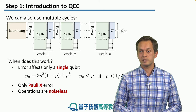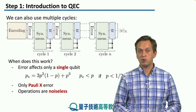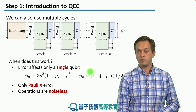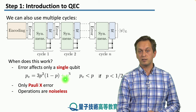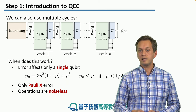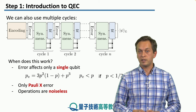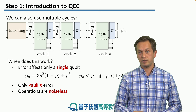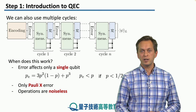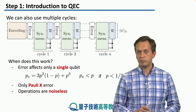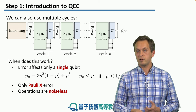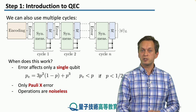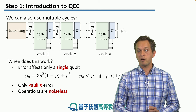We can perform the same analysis as for the classical repetition code and see that the probability of a logical error is given by the same expression: if the physical qubit flip probability is less than one half, we suppress the error. There are a few caveats: this repetition code works only for Pauli X errors — it does not correct Pauli Z errors — and we are assuming that all operations, the CNOTs and measurements, are noiseless.